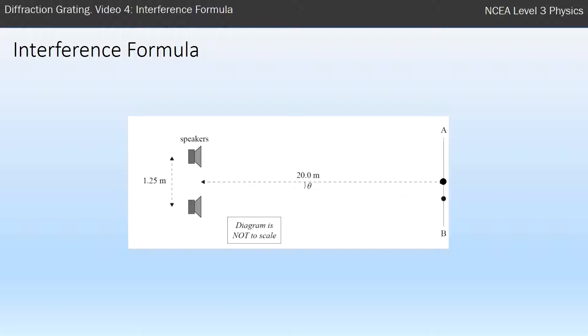So here I've just got an image from an exam, which is a simple double slit, and in fact it has two speakers instead of two slits, and what you get along A and B you get some loud spots and quiet spots and loud spots and quiet spots.